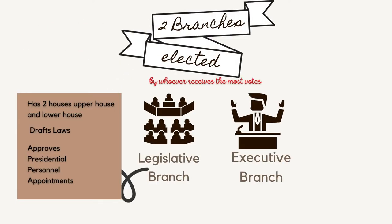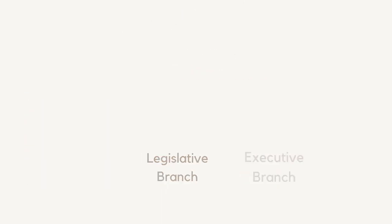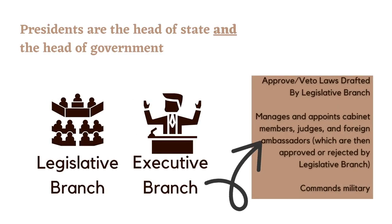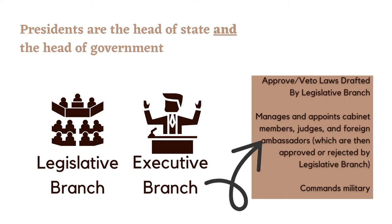In a presidential democracy there are two branches that are elected by whoever receives the most votes. The legislative branch has two houses, an upper and lower house. They draft laws and approve the presidential personnel appointments. Presidents are the head of state and the head of government, and they approve or veto laws that are drafted by the legislative branch.